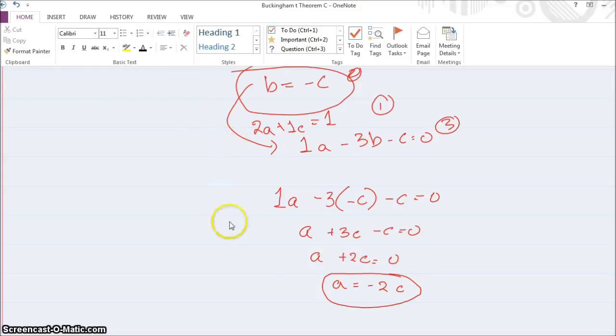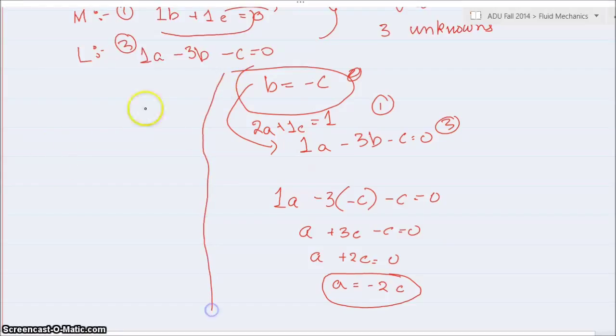So what we have next is we got this equation, a is equal to minus 2c. And now we have 2a plus c is equal to 1. So we have 2a plus c is equal to 1, and a, let me put this equation, a plus 2c is equal to 0.